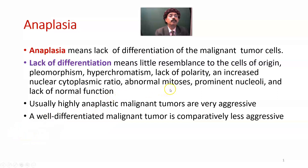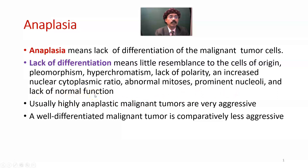Abnormal mitosis — too many mitoses, giving a lot of mitotic spindles, and those are abnormal. Maybe three components of the mitotic spindles. Prominent nuclei and lack of normal function of the anaplastic cells.